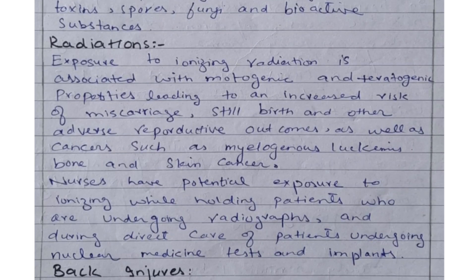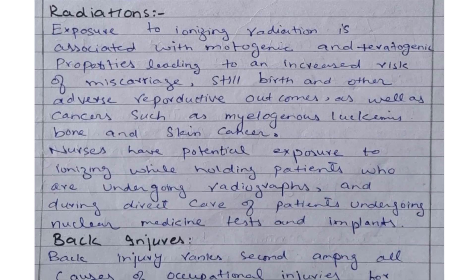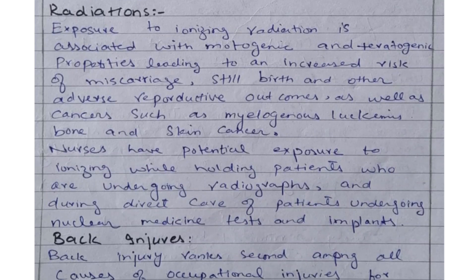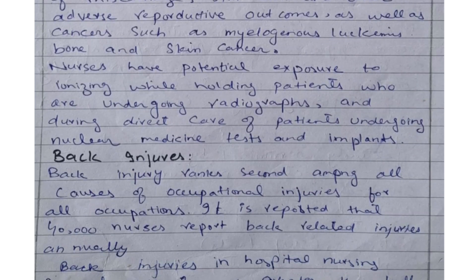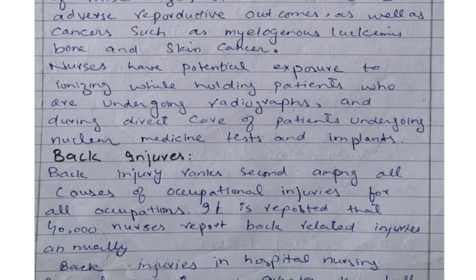Radiation hazards: exposure to ionizing radiation is associated with mutagenic and teratogenic properties, leading to an increased risk of miscarriage, stillbirth, and other adverse reproductive outcomes, as well as cancers such as myelogenous leukemia, bone, and skin cancer. Nurses have potential exposure to ionizing radiation while holding patients undergoing radiographs and during direct care of patients undergoing nuclear medicine tests and implants.